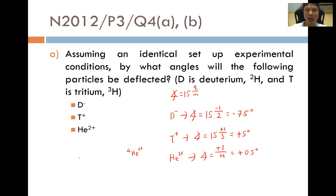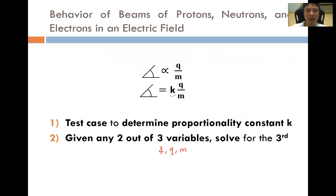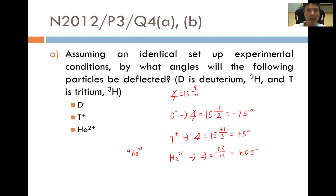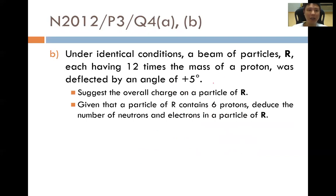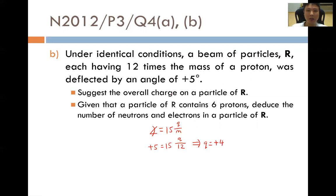This is how we use this mathematical relationship to solve various types of questions. For the last part of the question: under identical conditions, a beam of particles R, each having 12 times the mass of a proton, was deflected by an angle of plus 5 degrees — suggest the overall charge on a particle of R. Using the equation, 5 equals 15 multiplied by Q over 12, solving gives Q equals plus 4. The overall charge on particle R is plus 4.